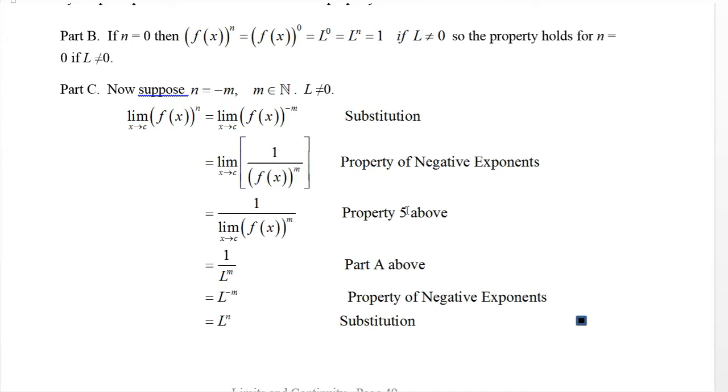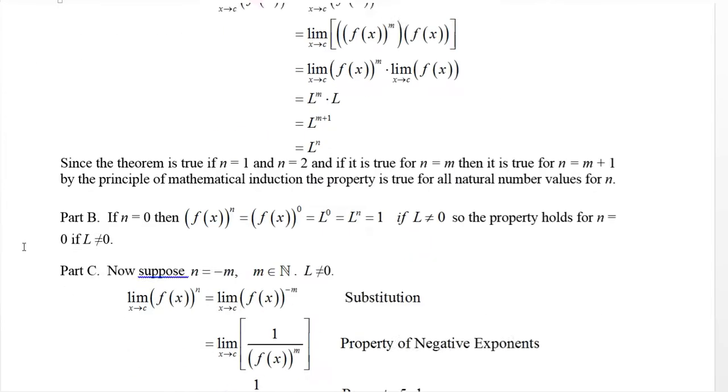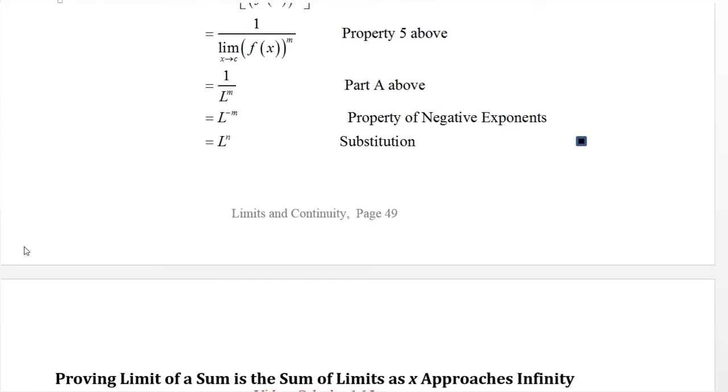And so we've now proved this is true at least for all integer powers. And what did we prove? We proved that the limit as x approaches c of [f(x)]^n is L^n when that limit is L anytime n is any integer.